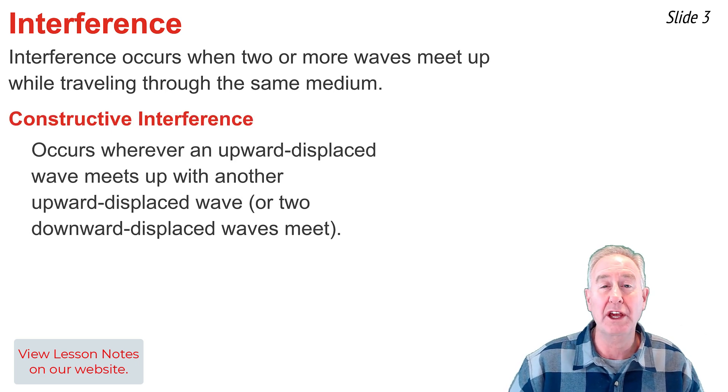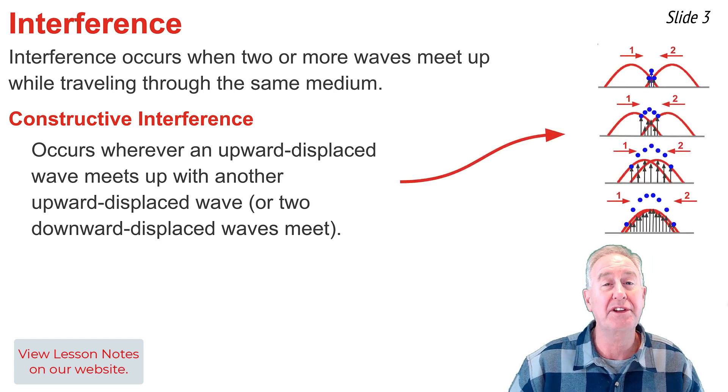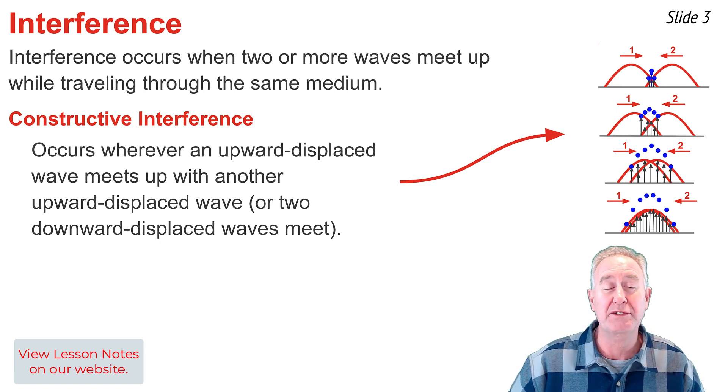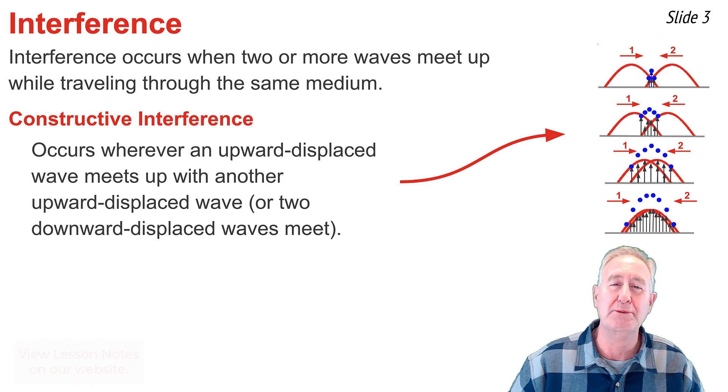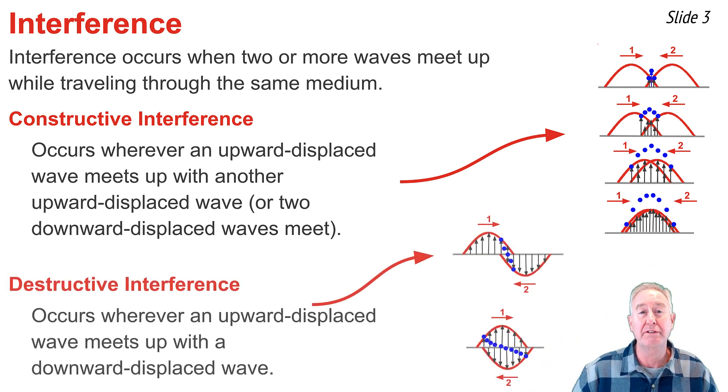Constructive interference occurs at any location where an upward displaced wave meets up with a second upward displaced wave. At that location, the resulting displacement of the medium will be greater than the displacement of the individual waves. Constructive interference can also occur when a downward displaced wave meets up with a second downward displaced wave. Destructive interference occurs at any location where an upward displaced wave meets up with a downward displaced wave. At that location, the resulting displacement of the medium will be less than the individual displacements of the two interfering waves.